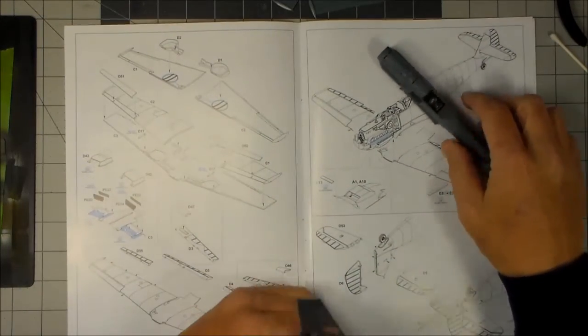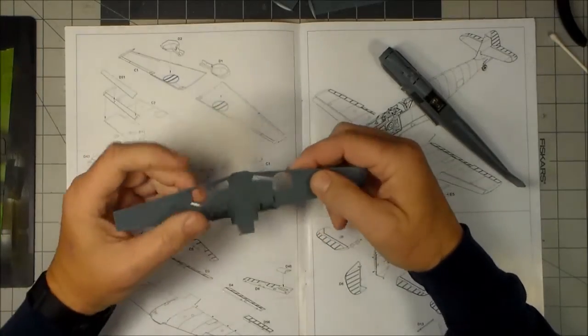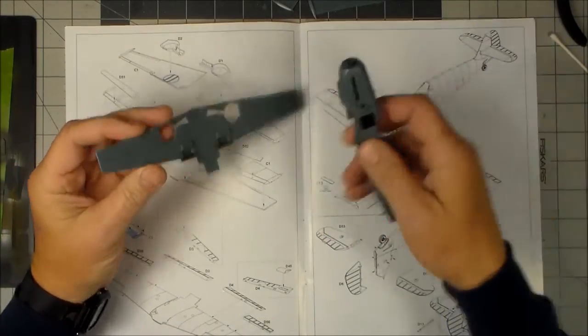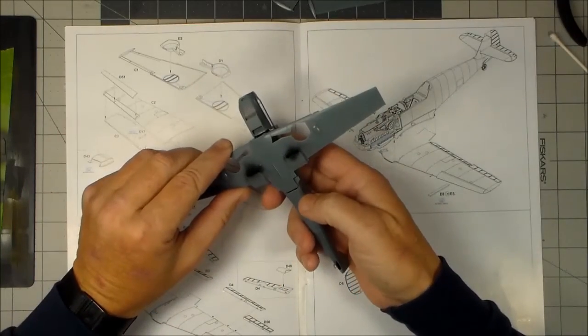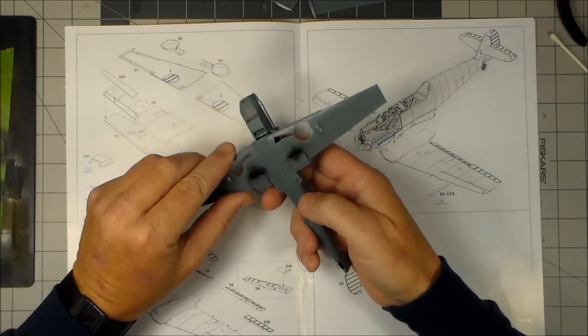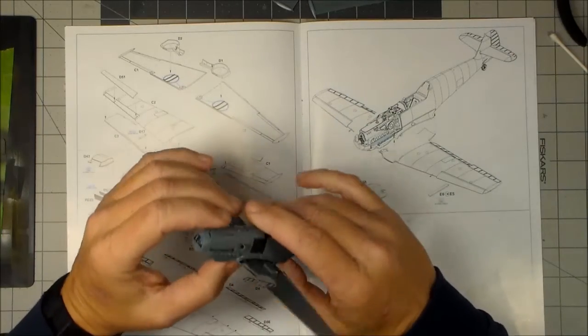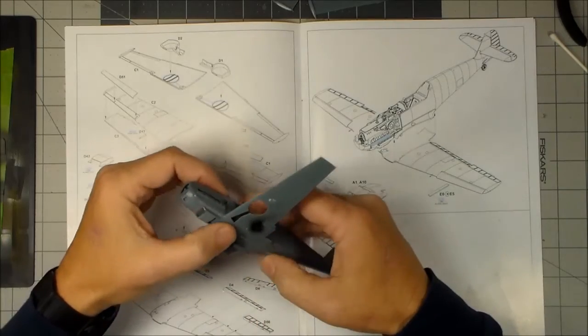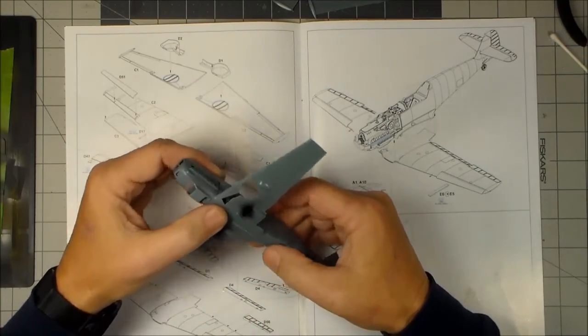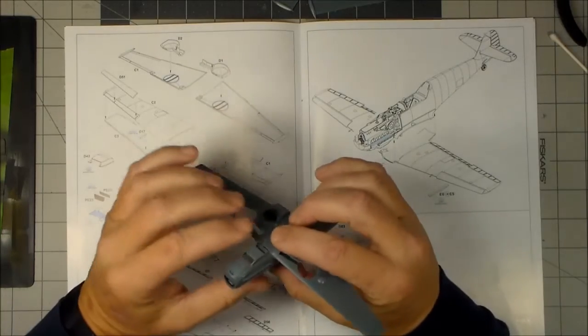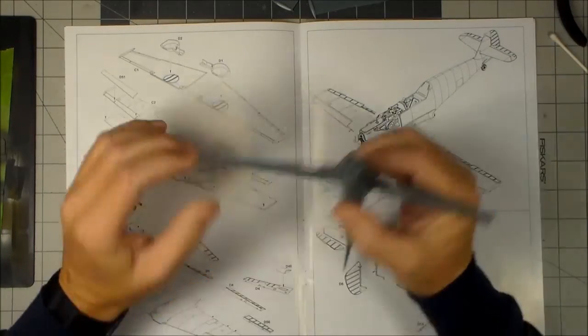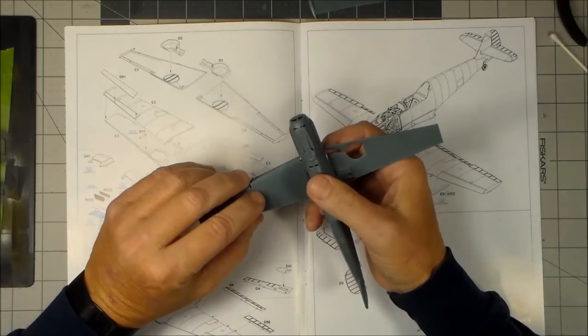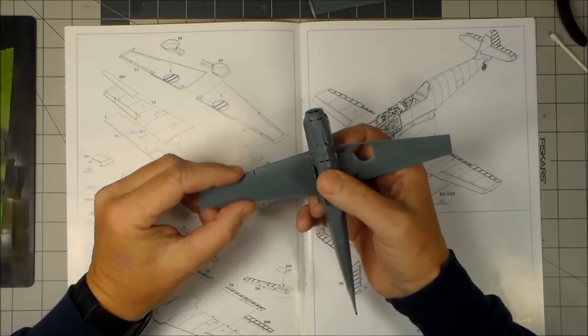However, with a wing assembly like this, I prefer to do it a little differently. What I do is this lower half here - after I test fit and everything - I like to install this first. I install it, make sure everything's lined up and cement it into place and let it sit.